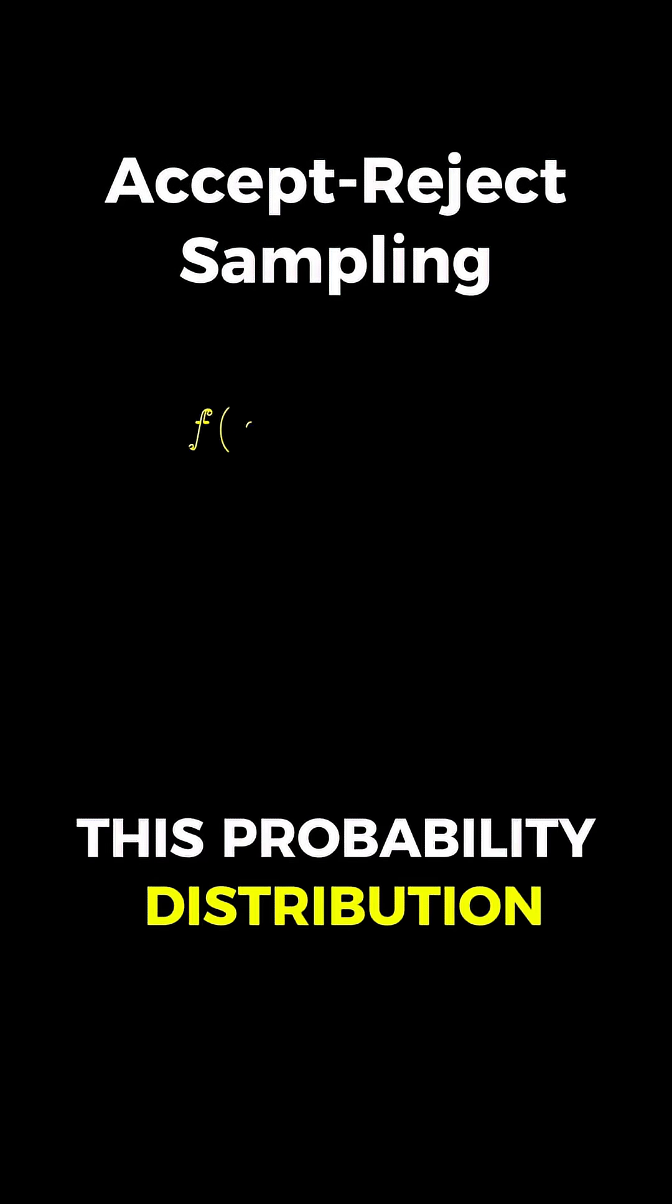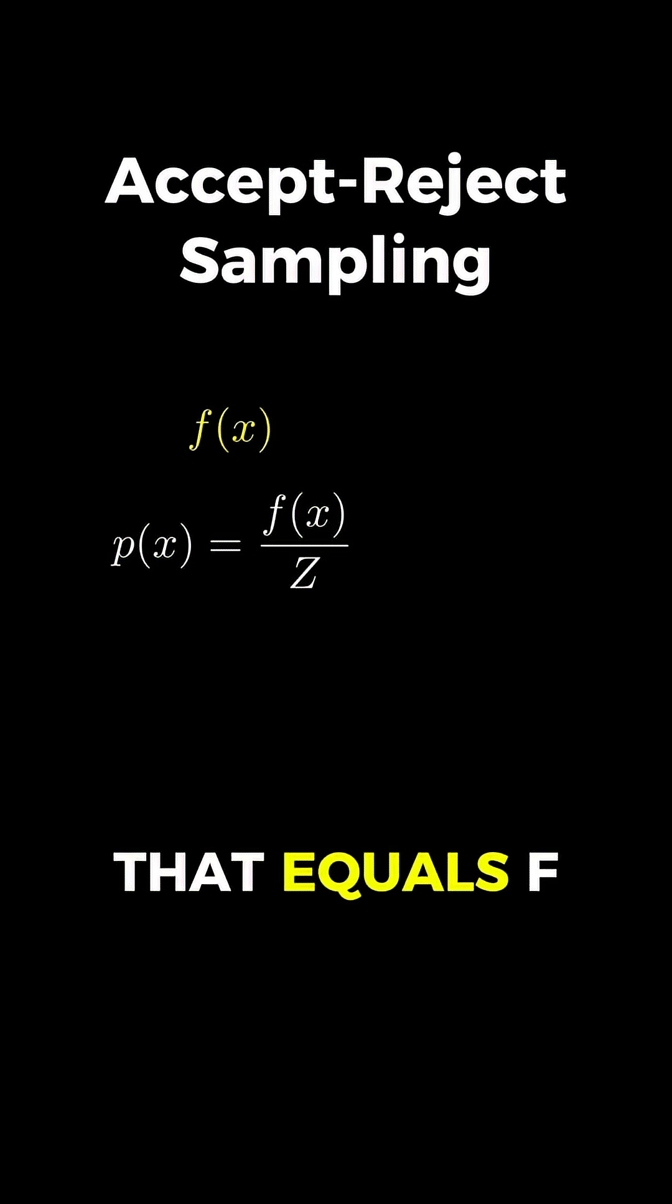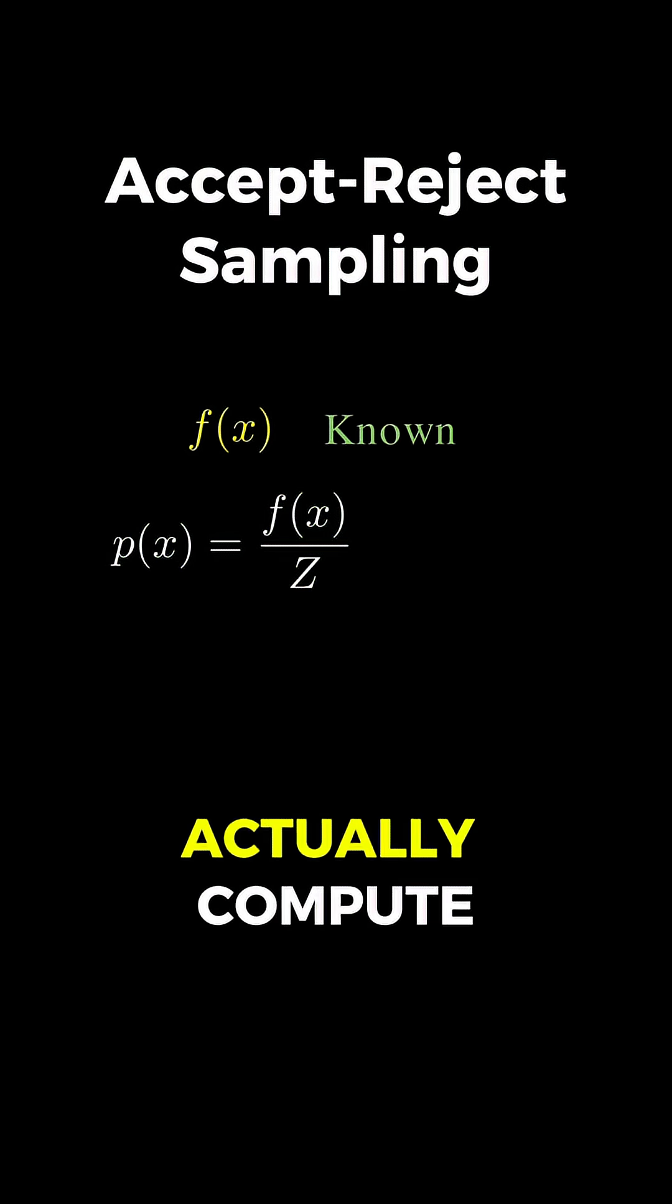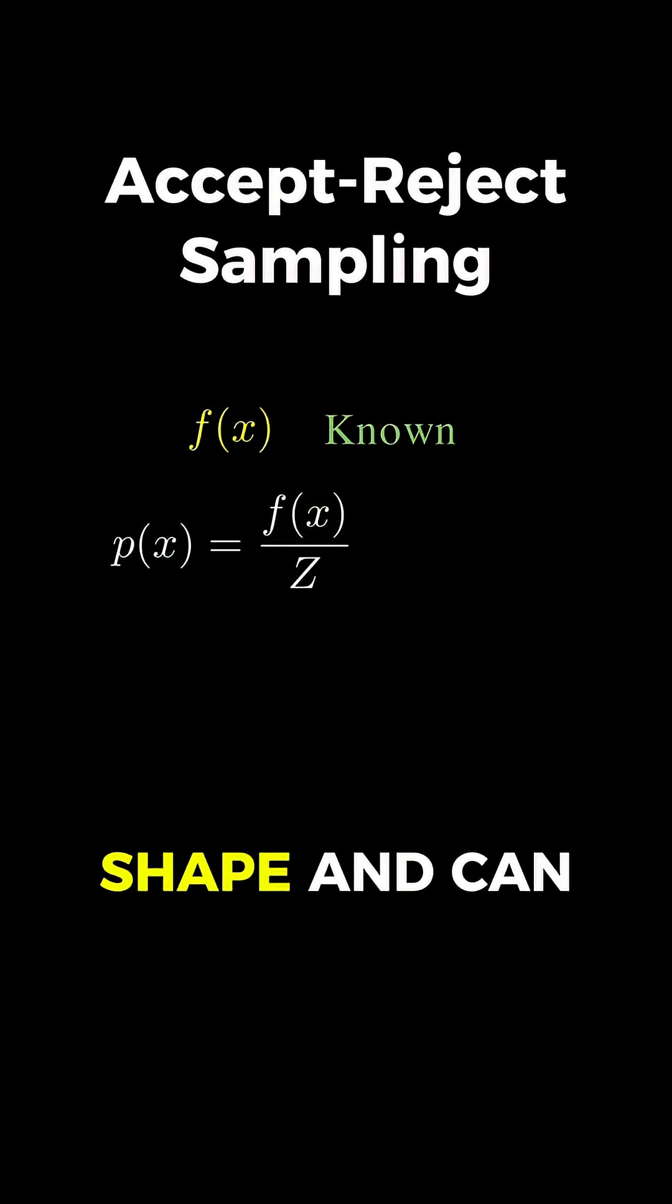So you have this probability distribution p that equals f divided by z, where f is the function you can actually compute. You know its shape and can evaluate it at any point.